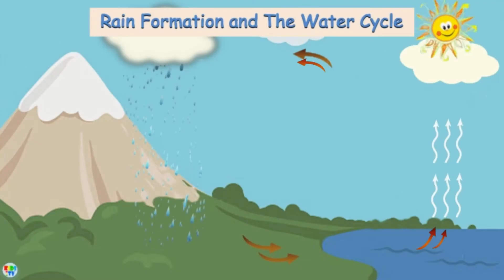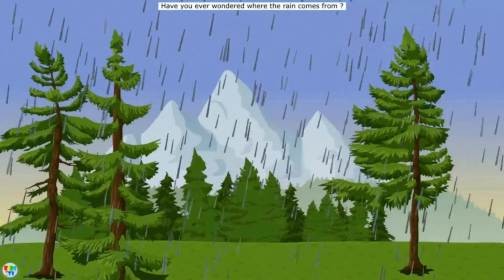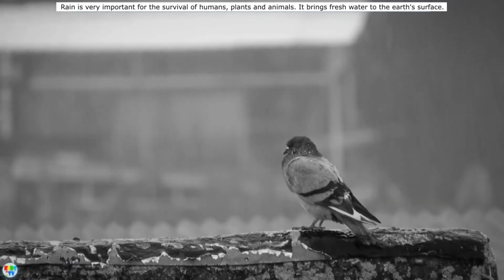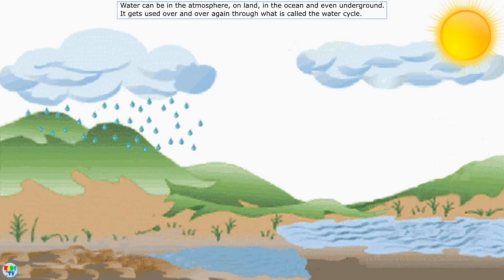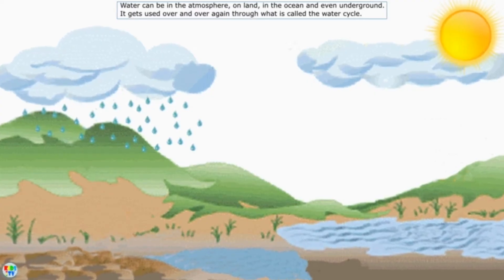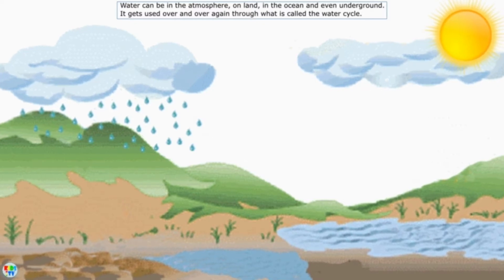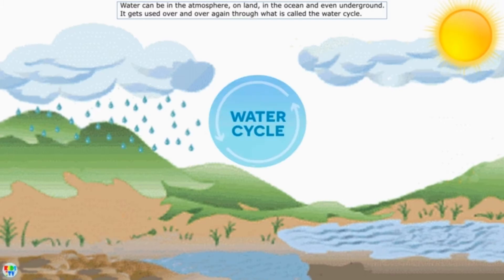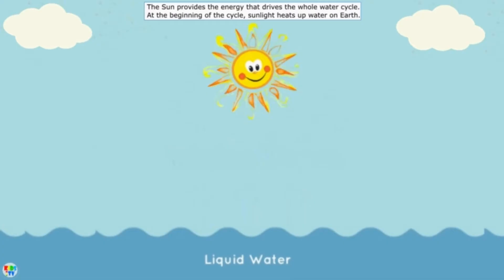Rain formation and the water cycle: Have you ever wondered where the rain comes from? Rain is very important for the survival of humans, plants, and animals. It brings fresh water to the earth's surface. Water can be in the atmosphere, on land, in the ocean, and even underground. It gets used over and over again through what is called the water cycle. The sun provides the energy that drives the whole water cycle.